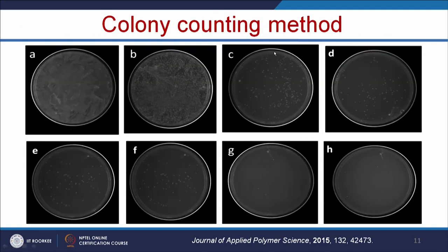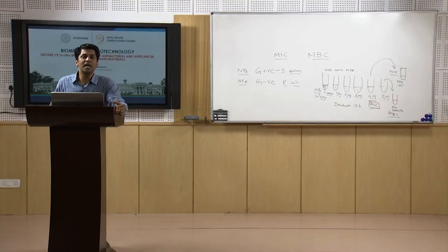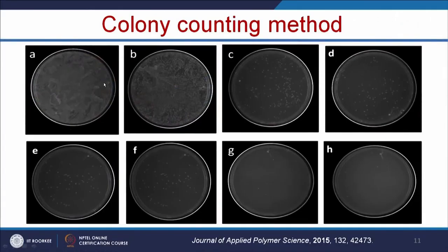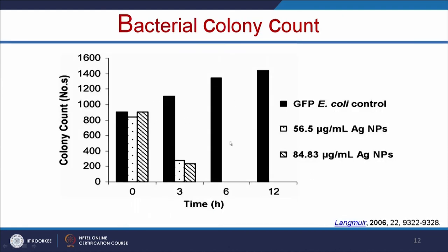Another method is the colony counting method. It is similar to the visual turbidity method — from there you can inoculate into the bacterial plate. By spread plating technique, you spread that bacterial solution on the plate and incubate overnight, then count the number of colonies. With respect to concentration, the bacterial colony count goes down. The control shows a huge number of colonies, and with increasing concentration of nanoparticles, the number of bacterial colonies goes down.